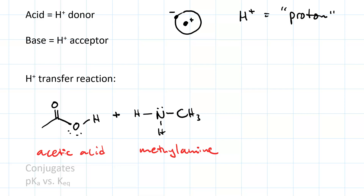Now we say this is a proton transfer reaction, and the Bronsted-Lowry definition is proton-centric, but what's really happening is movement of electrons. The lone pair on the base is where the action starts, and we have a curved arrow that looks like this — curved arrow number 1 — and then the second curved arrow looks like this — curved arrow number 2.